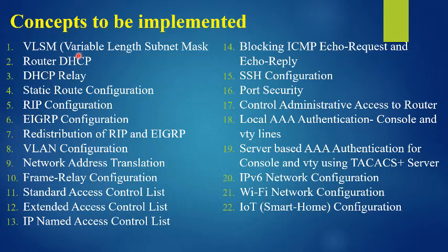VLSM means we are going to do subnetting — a major network will be given and we are going to divide it into subnets using Variable Length Subnet Mask. The second concept is Router DHCP, where we are going to make a router act as a DHCP server. The third concept is DHCP Relay, where we use the IP helper-address command to make routers forward broadcast packets.